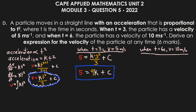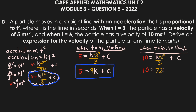For the second condition, v equals 10 and t equals 6: substituting gives 10 equals k times 6³ over 3 plus c. Since 6³ is 216, and 216 divided by 3 is 72, we get the second equation: 10 equals 72k plus c.